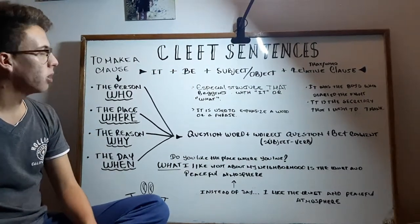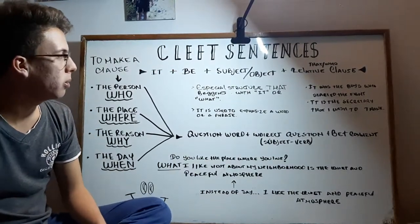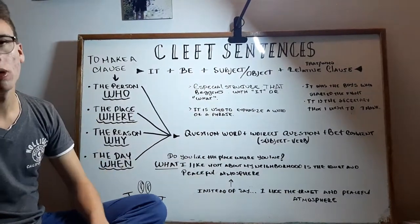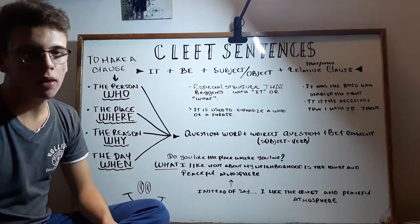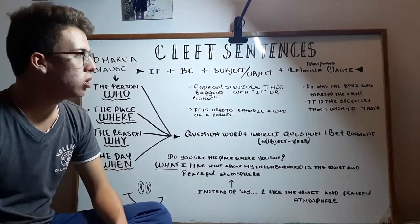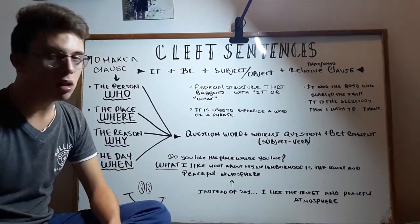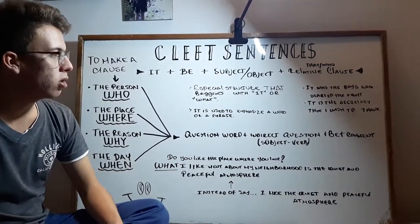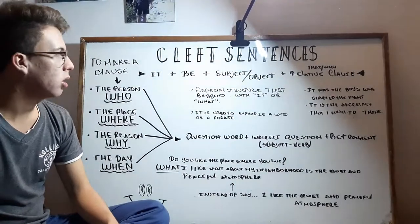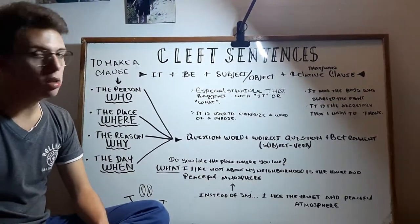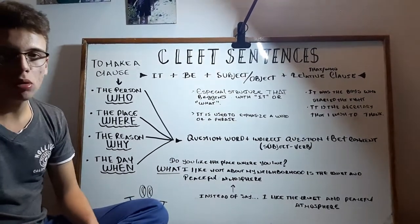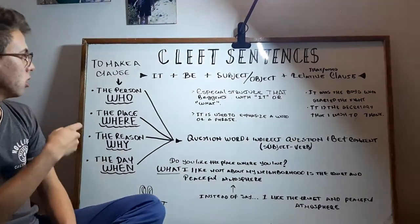The first structure is with 'it,' and the formula is: 'it' plus 'be' plus subject or object plus a relative clause using 'that' or 'who.' I have two examples: 'It was the boys who started the fight' and 'It is the secretary that I wish to thank.' That's all about the cleft sentence using 'it.'